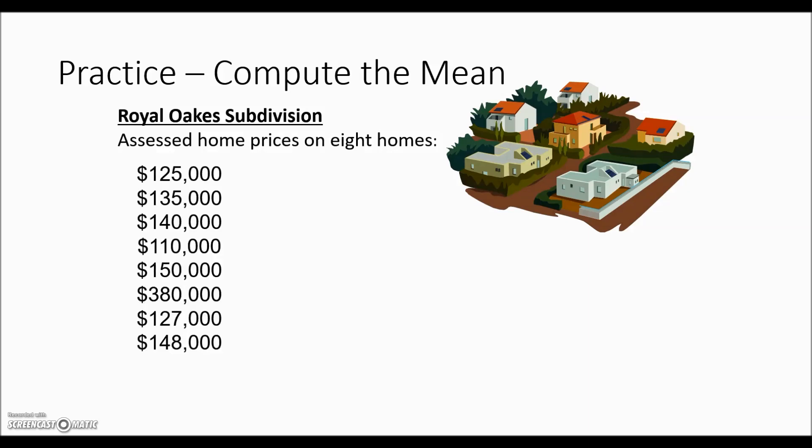Here we have values of 8 homes listed for this subdivision. They're asking us what is the mean home value. So we will add up all of those house values and divide by 8 since there are 8 homes. The mean value for this group of home prices is $164,375. But if you look at the values, all of them are very similar relatively speaking with one exception. $380,000 is more than double the highest priced house here. In the statistical world when we have values that are extremely large or extremely smaller than the rest of the data, we have what's called an outlier. So the mean isn't always the best measure of central tendencies when this is the case.